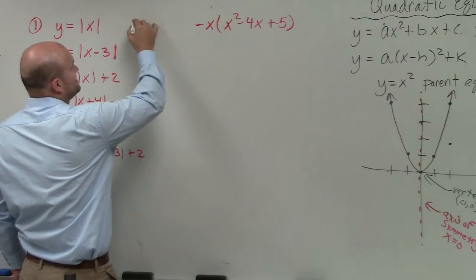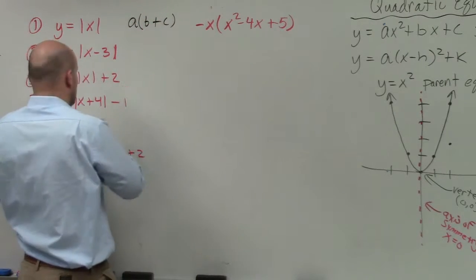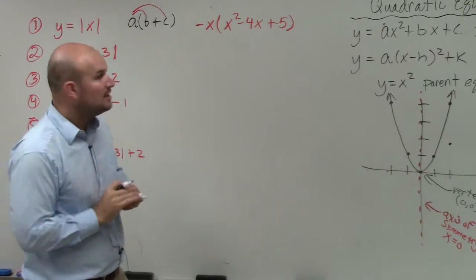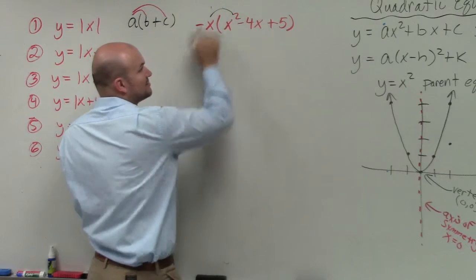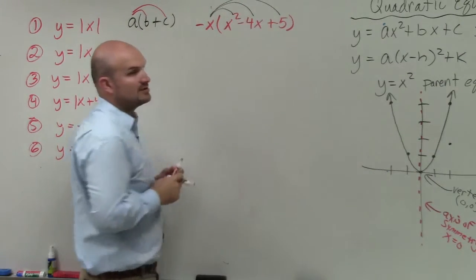And the rule for distributive property basically states, when you have a term outside, you have to multiply that term times all of the terms on the inside. So basically I need to multiply negative x squared times x squared, negative x squared times negative 4x, and negative x squared times 5.